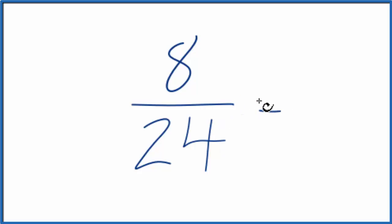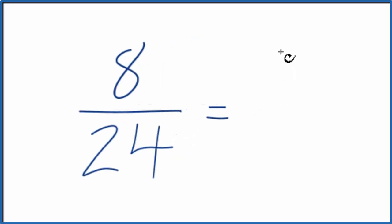So I could divide the top by 8. That would give me 1. 8 divided by 8 is 1. And then the denominator here on the bottom, if I divide 24 by 8, I get 3.